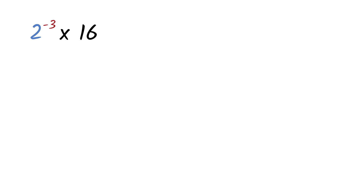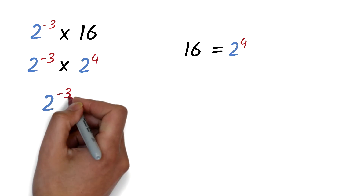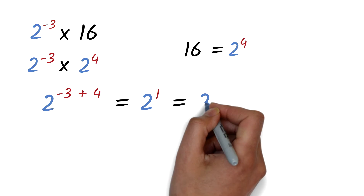Another way to simplify this is to recognize that 16 can be written as 2 exponent 4. We then have 2 exponent negative 3 times 2 exponent 4. From the product rule, since the bases are the same, we add the exponents: negative 3 plus 4 equals 1, giving us 2 exponent 1. We know 2 exponent 1 is simply 2, giving us the same answer.